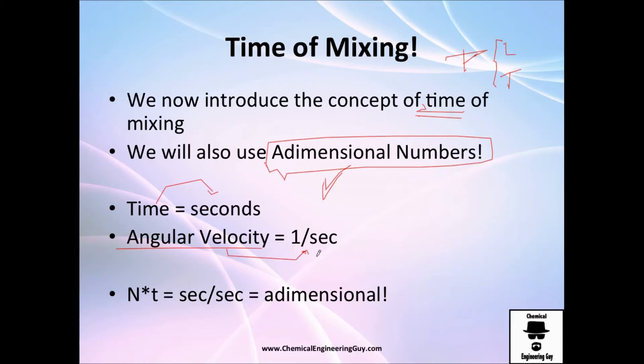The interesting part right here is that if you multiply angular velocity times the time, this is seconds times one per second or seconds to the minus one, you will cancel it and you will get a dimensionless number.